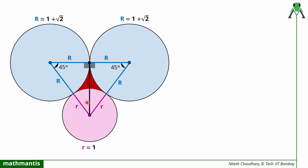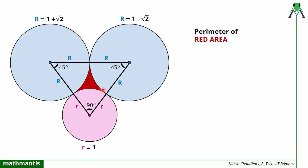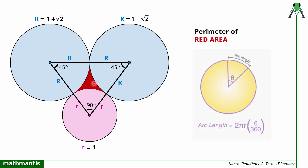Now I can define this angle as well: since we have 90° and 45°, the remaining angle must also be 45 degrees. So both of these angles are 45 degrees. We have now defined the angles at the center of each circle: this angle is 45 + 45 = 90 degrees, and these two angles are each 45 degrees.